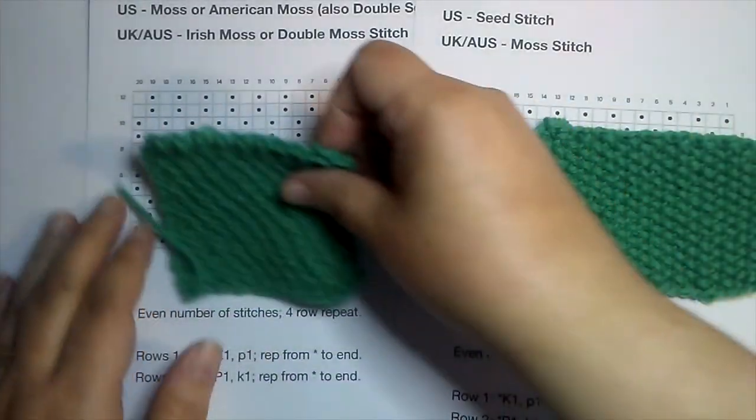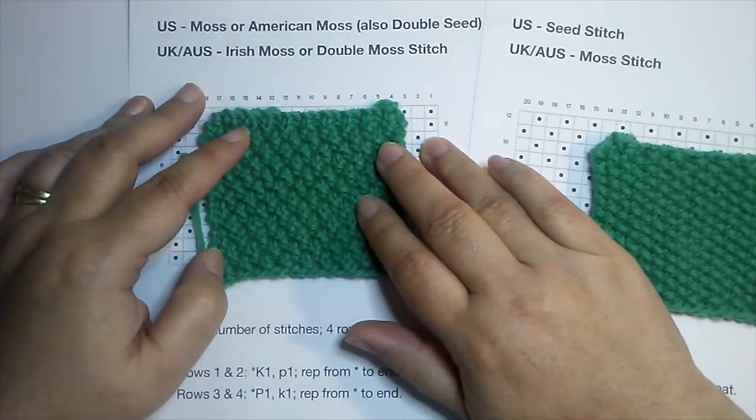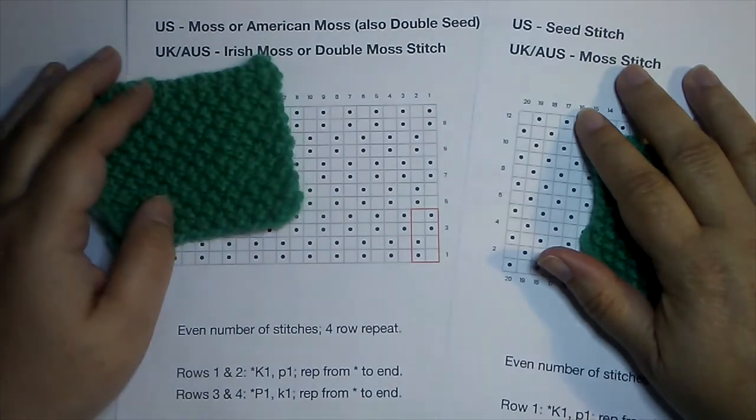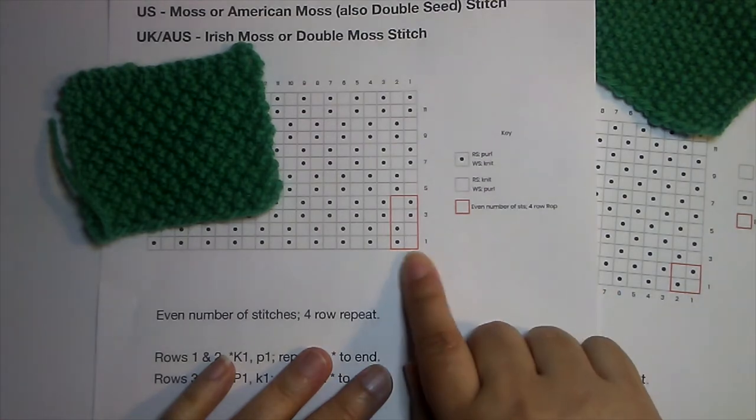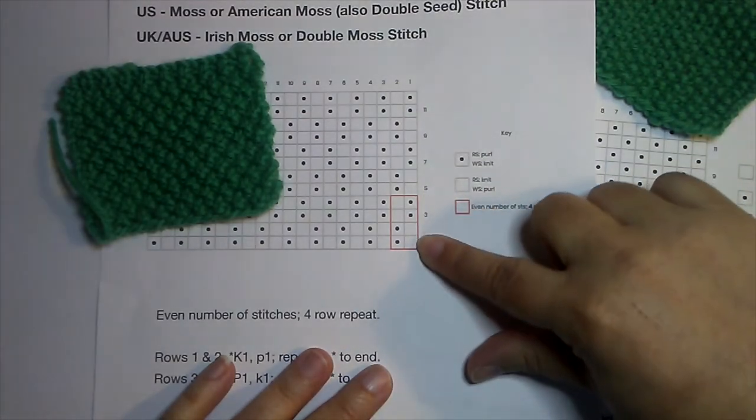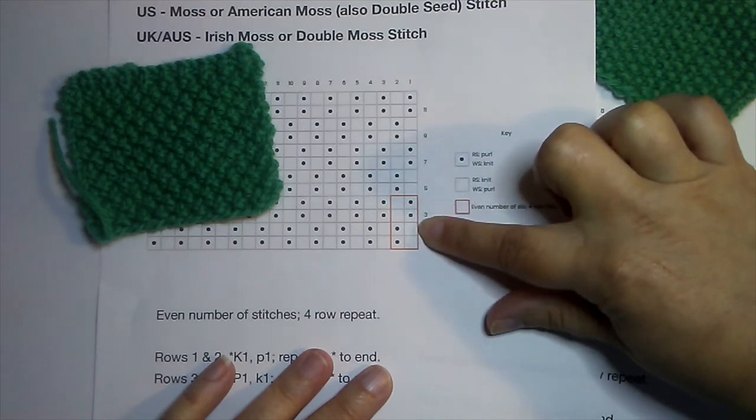In this pattern, moss stitch if you're in the US, Irish moss usually if you're in the UK or Australia. This one is a two row repeat and a two stitch repeat. This one is an even number of stitches, but it's a four row repeat. That knit one, purl one pattern is broken every two rows instead of every row.